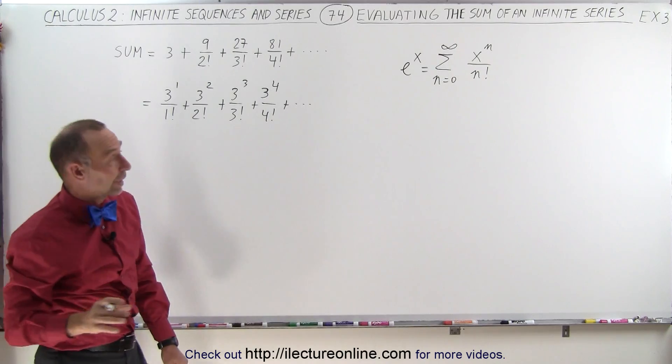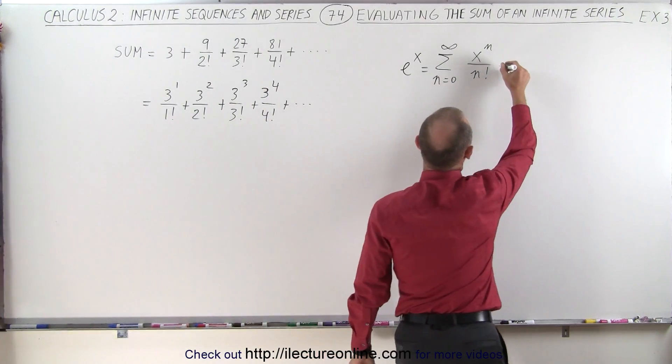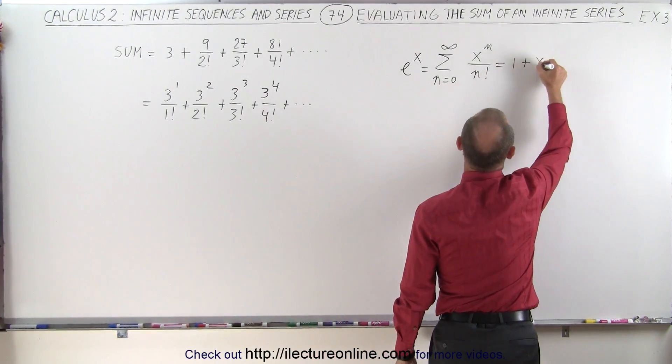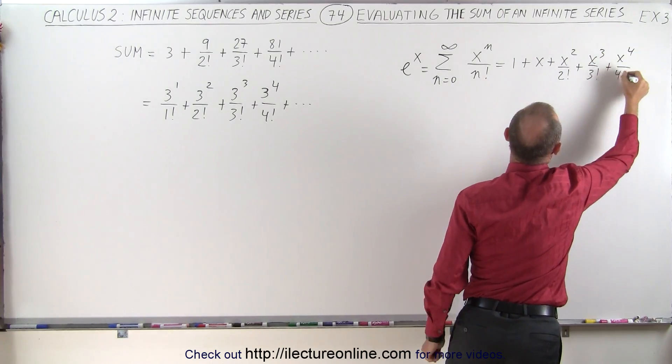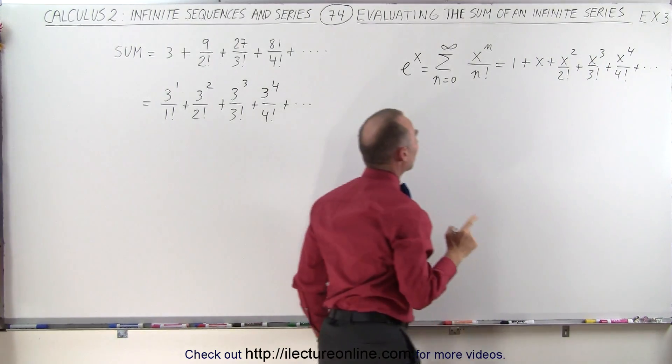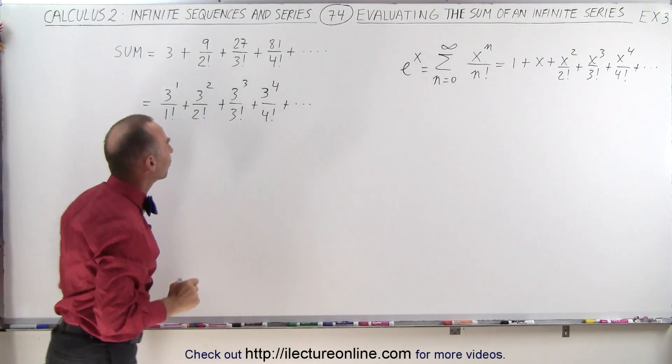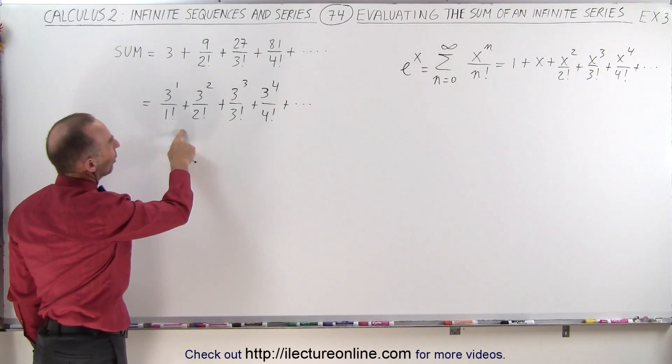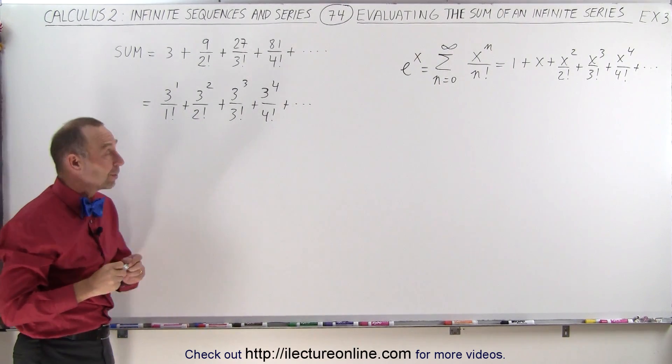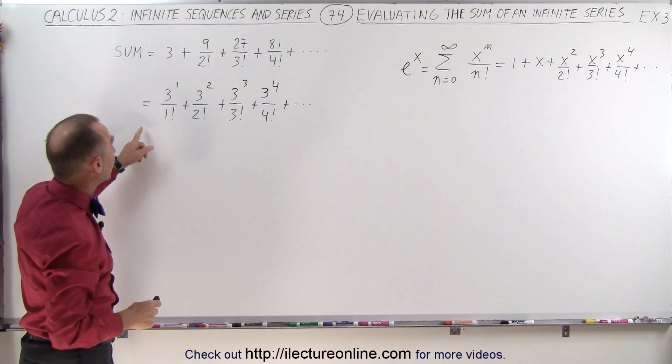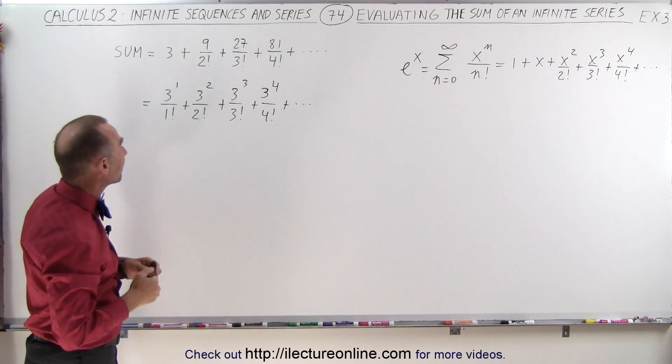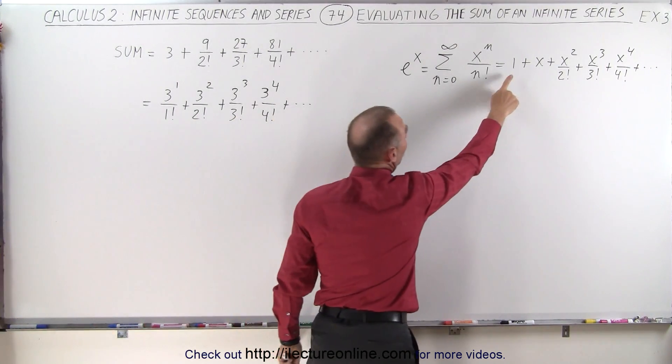And of course what that means is that this is equal to 1 plus 3 and so forth. And then when we look at that infinite series and this infinite series we can see a lot of similarity. First of all, the denominator looks exactly the same except we're missing the constant term 1.